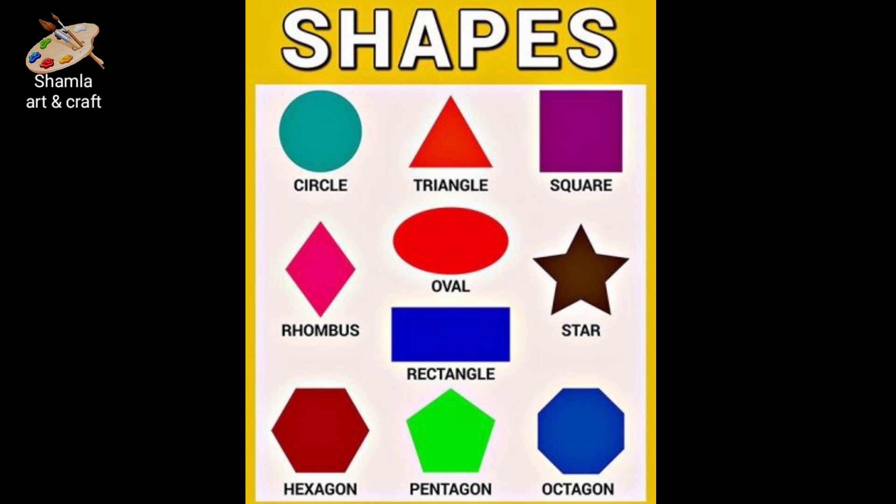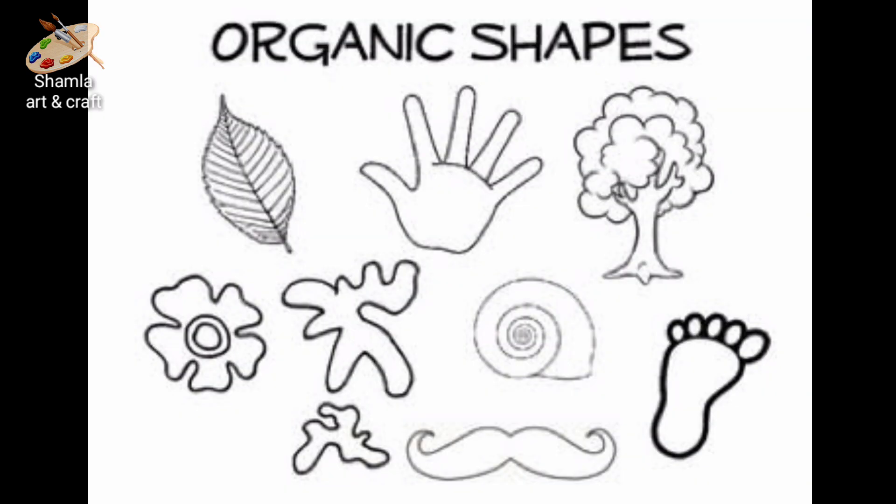The shapes are the geometrical shapes. Here are many shapes. These shapes are organic shapes or freeform shapes. This is a free-flowing method. This is a natural-related, free-form shape.